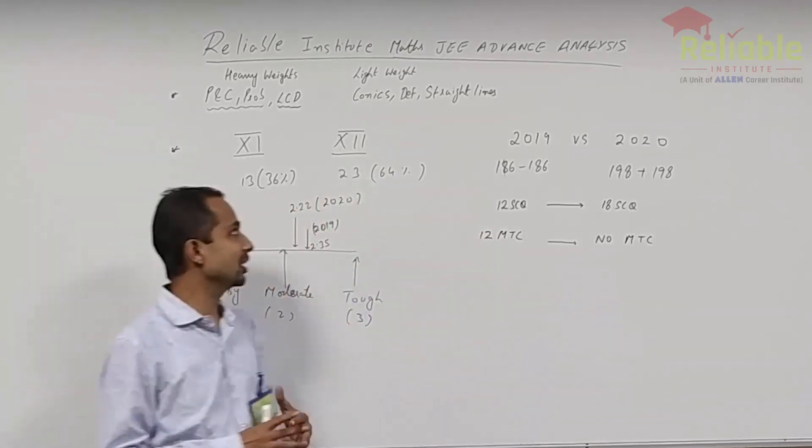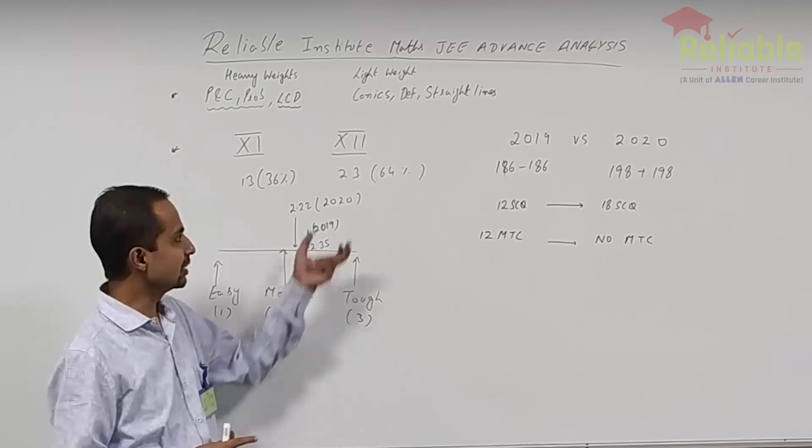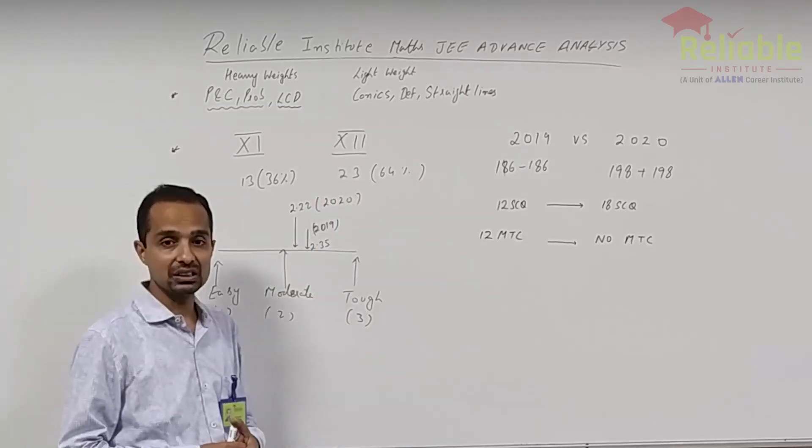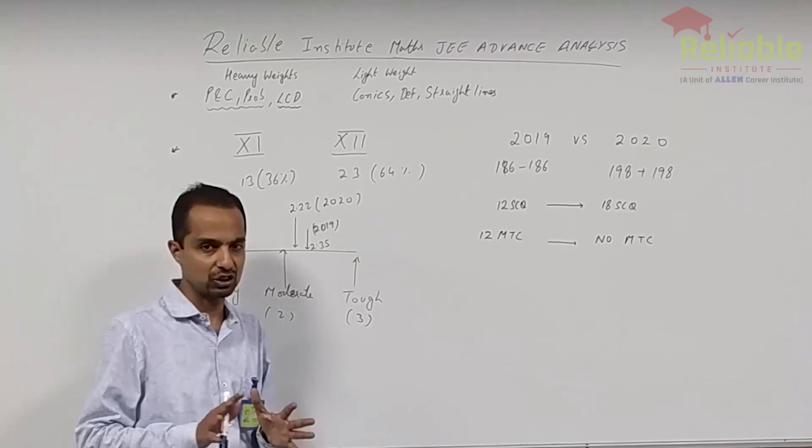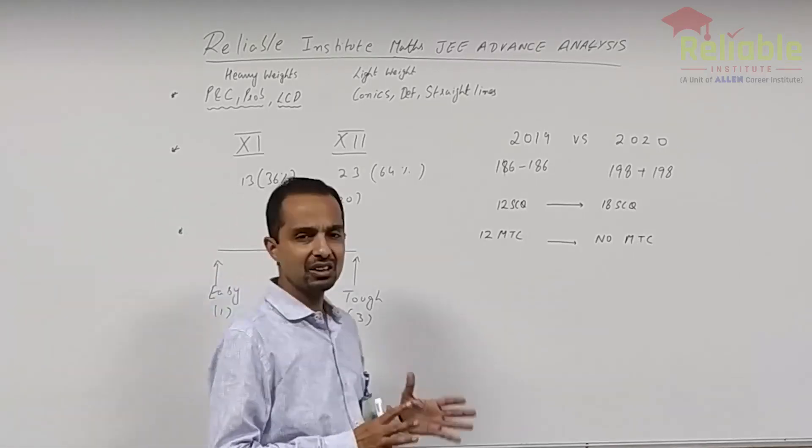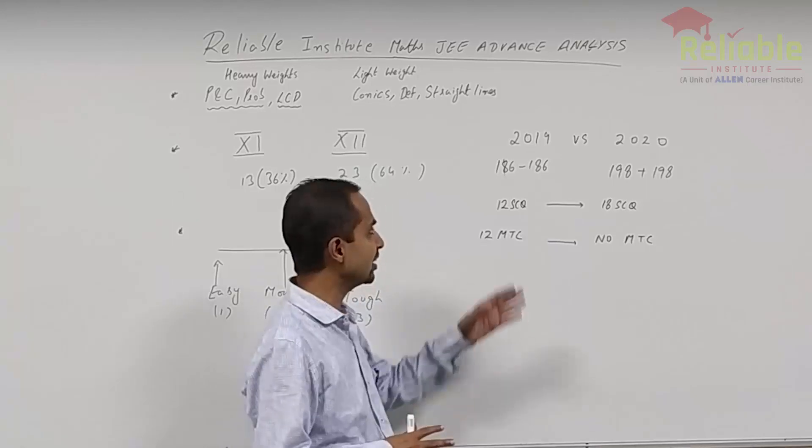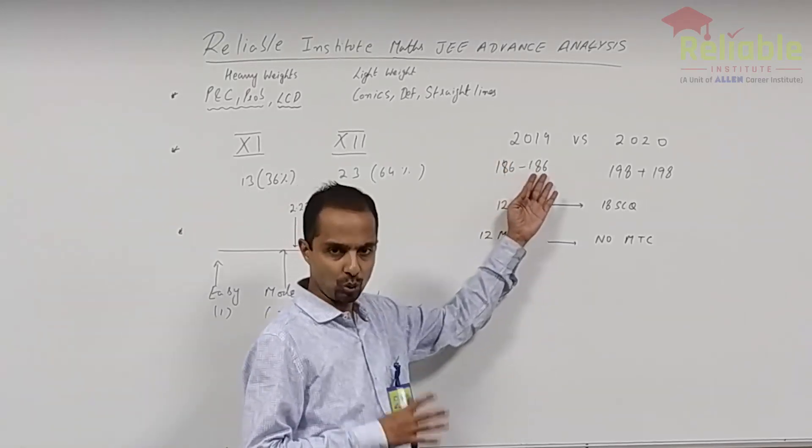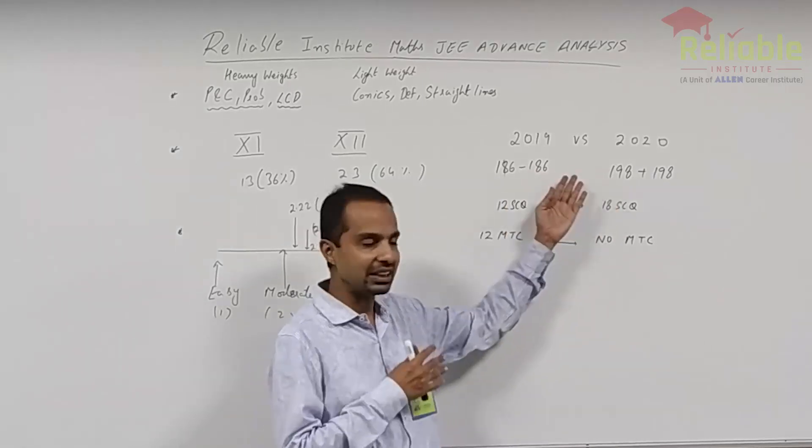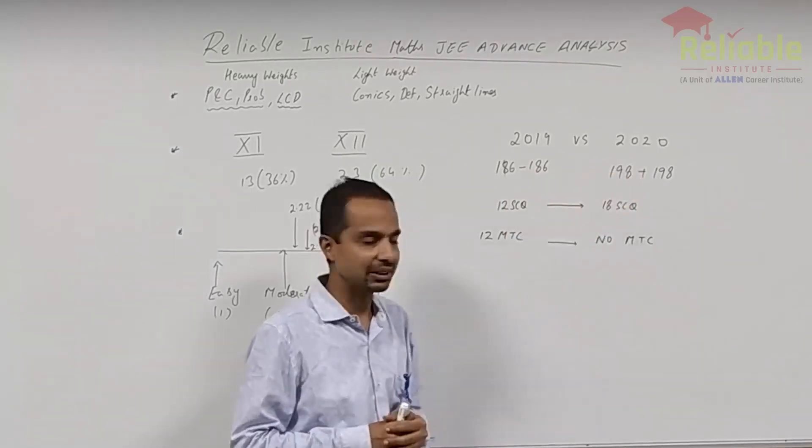This year, the 11th and 12th, it is an unlikely bias. That is 23 questions out of, see the pattern, as far as pattern goes, pattern was more or less similar. Except for the fact that in 2019, 186 total marks paper was there and this year instead of 186, it was 198.